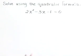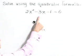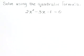Solve using the quadratic formula. Here we have the equation 2x² - 3x - 1 = 0.